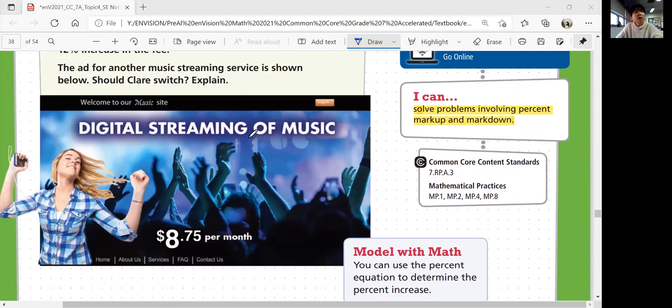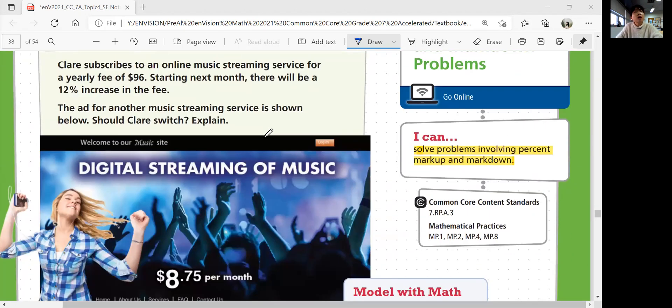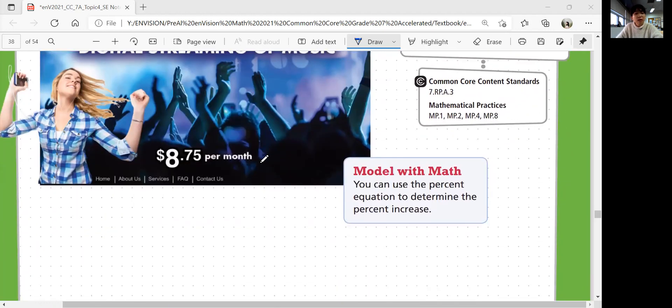This is the app, digital streaming of music, $8.75 per month. The plan she currently has a yearly fee of $96 and starting next month, it's going to increase 12%. But what does 12% mean? Let's look at current plan and then calculate the other plan to see which one is cheaper.